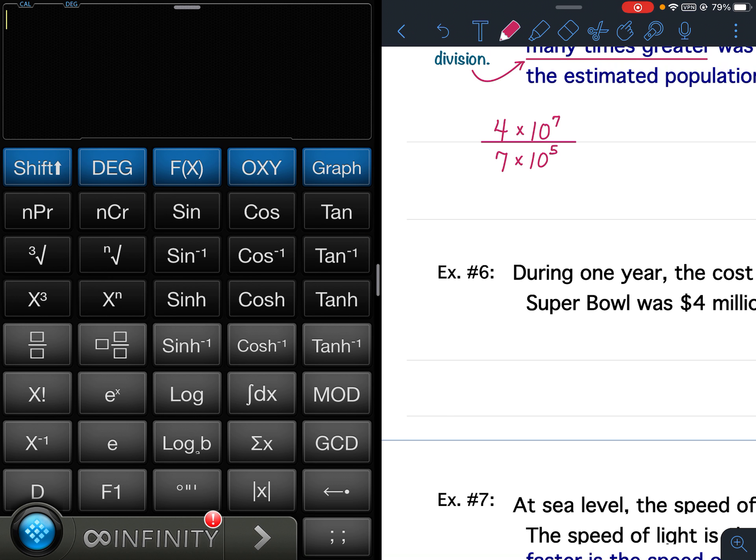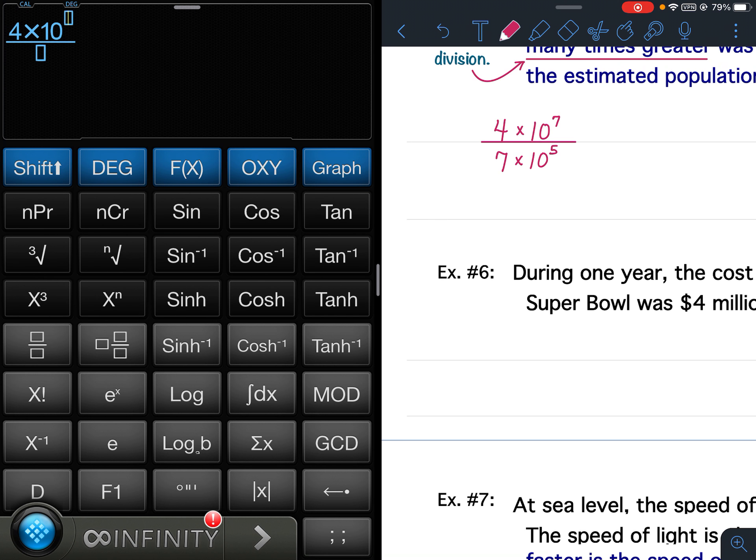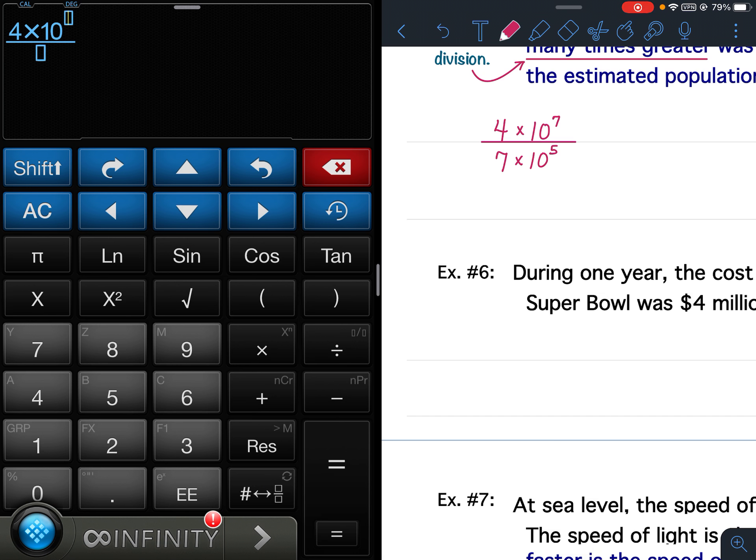I want to start by putting in the fraction button. If you were using the school calculator, you would start by using the fraction button. And then, I would put 4. If you were using the school calculator, you would hit that times 10 to the nth button. Since I'm using this one, I'm going to put times 10. And then I have to go to the exponent there. Put in a 7. Over arrow, over arrow to get to the bottom. 7 times 10 to the 5th. Hit enter.